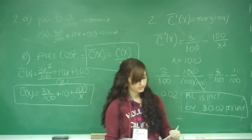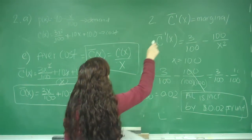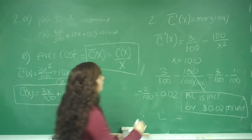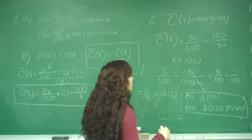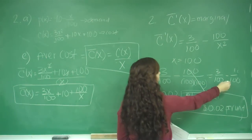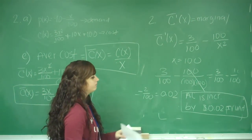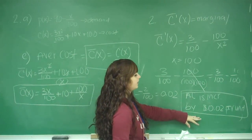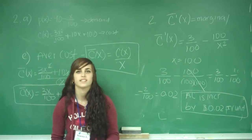For the last part, the marginal average cost when x = 100: take the derivative of the average cost function to get 3/100 - 100/x², plug in x = 100, and get 2/100 = 0.02. Because it's positive, the average cost is increasing by 2 cents per unit. That is number 2, parts A through E.